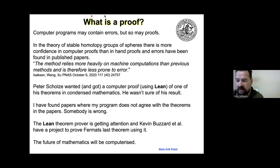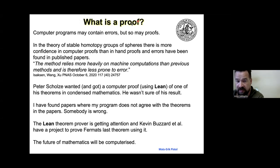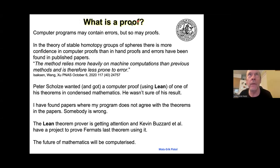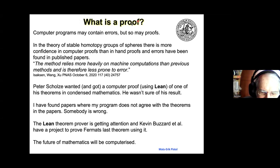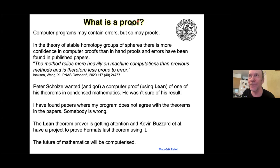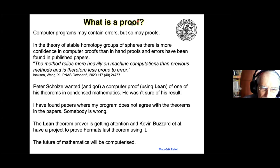I'll demonstrate my computer program. We have five minutes left. The case where my program disagrees with a paper: they are claiming that two pairs of graphs are isospectral, but I don't get them to be isospectral. Nobody at this conference has resolved this.